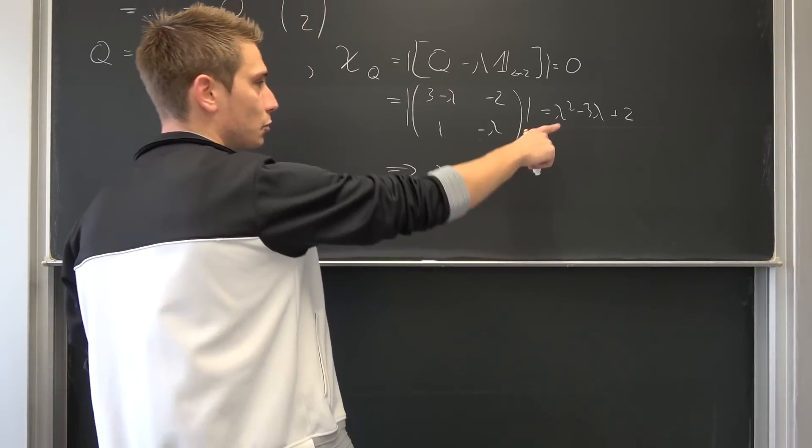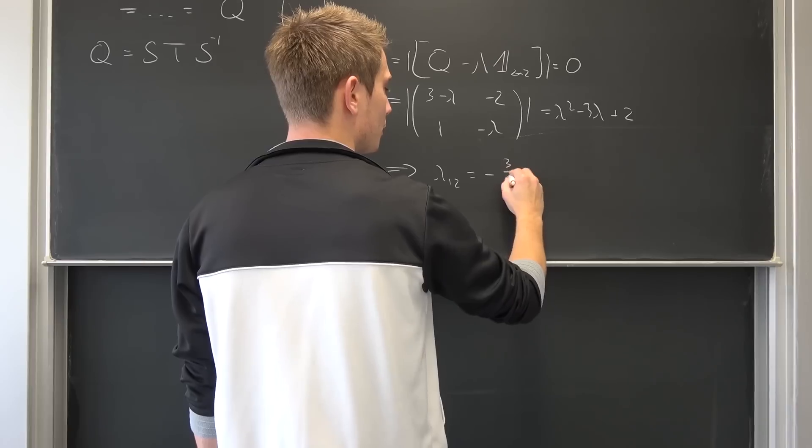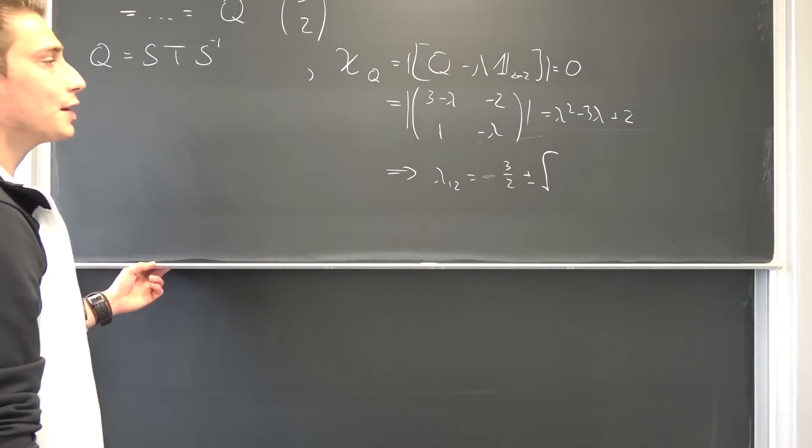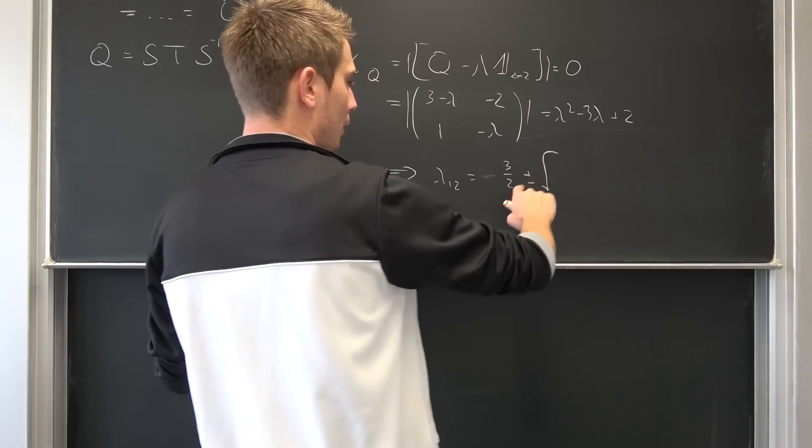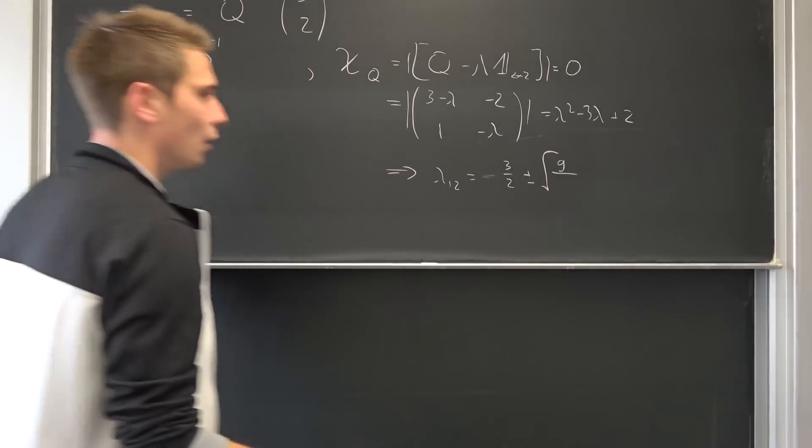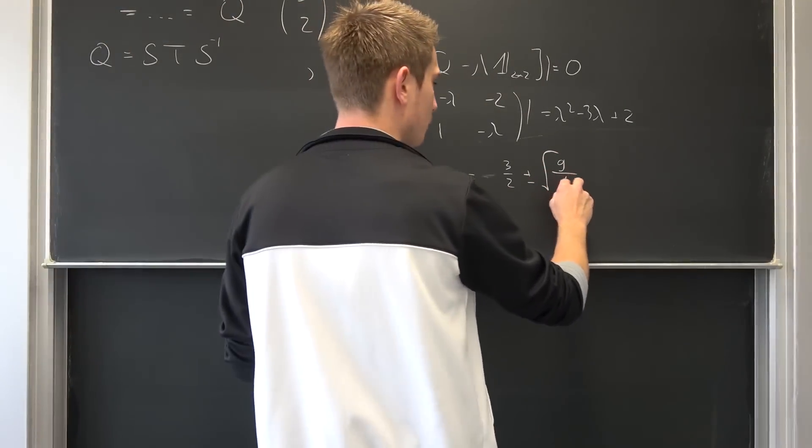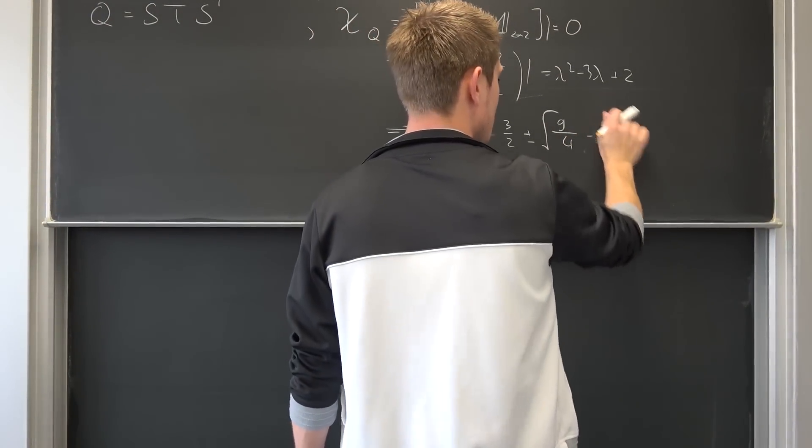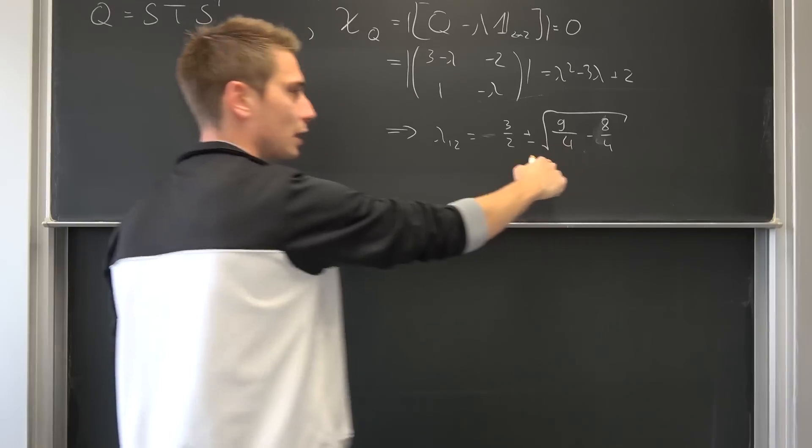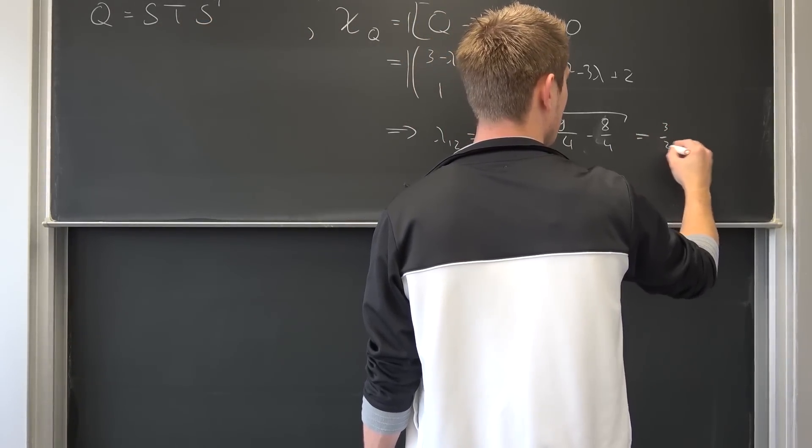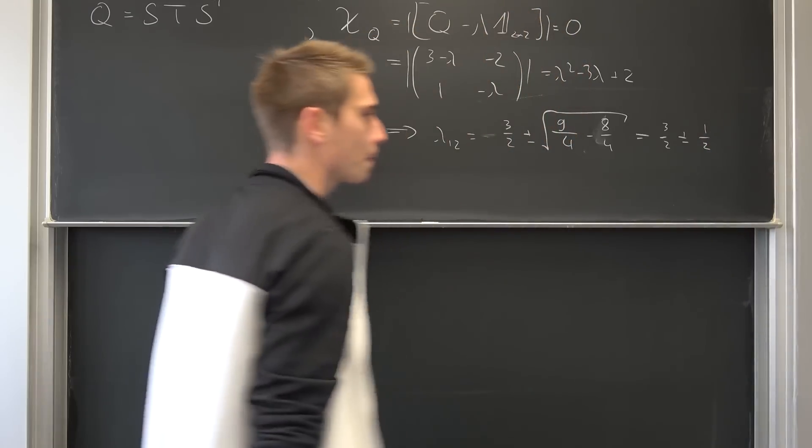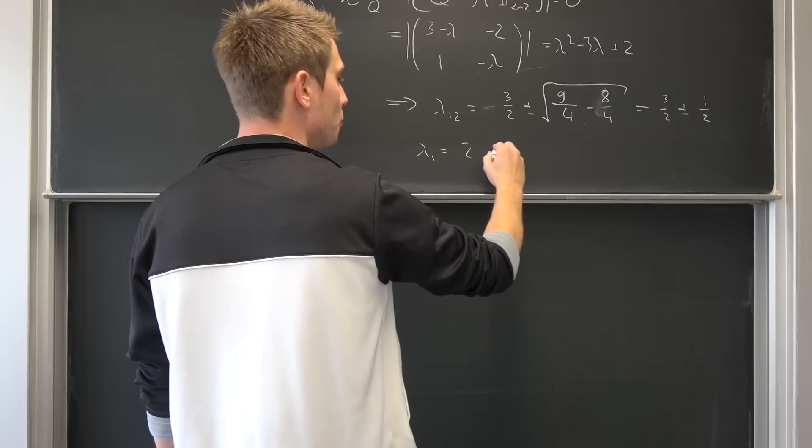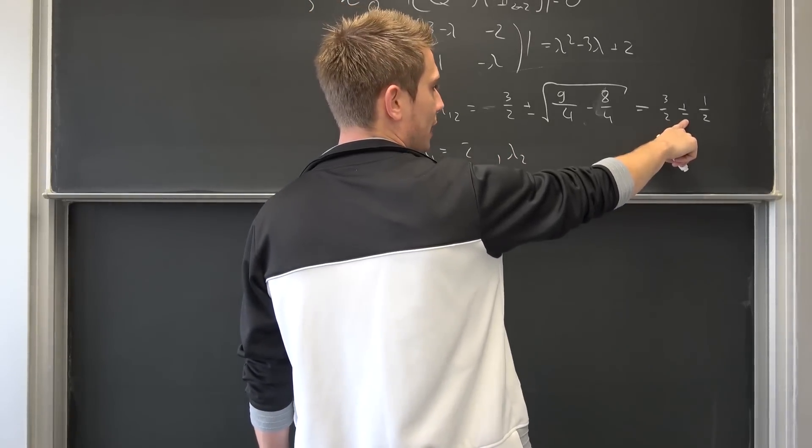Lambda 1 and 2, our two eigenvalues are going to be positive 3 over 2, plus minus the square root of - this is going to give us 9 over 4, and then minus 2, meaning we are going to expand this fraction. This is going to result in 8 over 4, meaning we are going to have 1 quarter. Taking the square root of that is going to result in 3 over 2 plus minus 1 half. Now we can add and subtract stuff. So our first eigenvalue is going to result in 2 and our second eigenvalue is actually nothing other than 1.